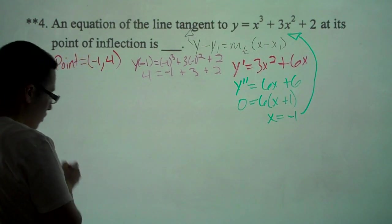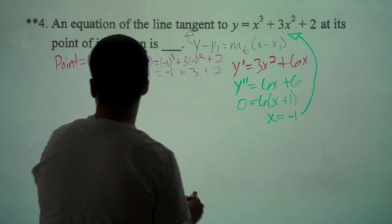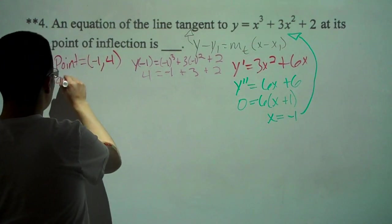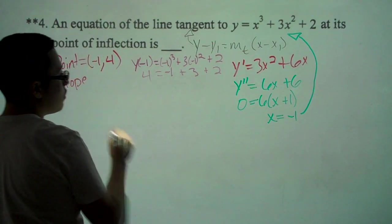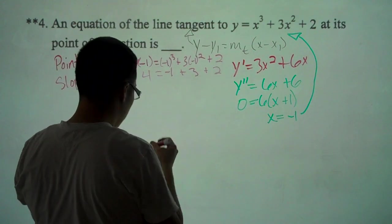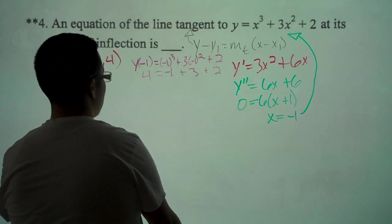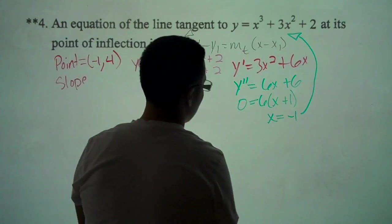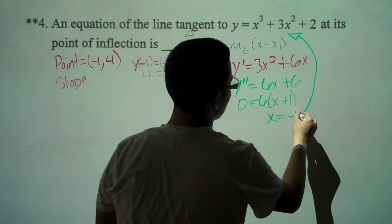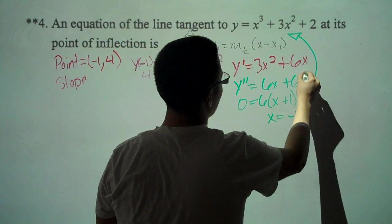Now we have to find our slope, which is m sub t, and in order to find that, we have to plug in negative 1 to our y prime.